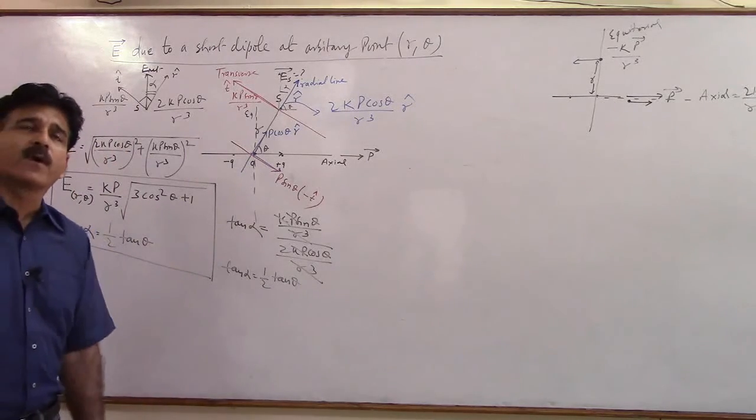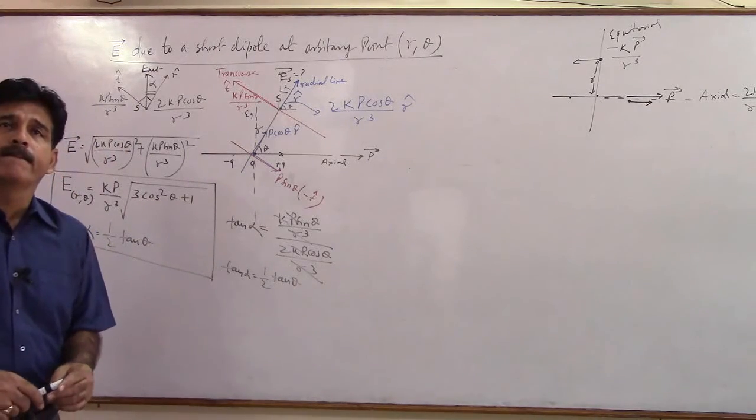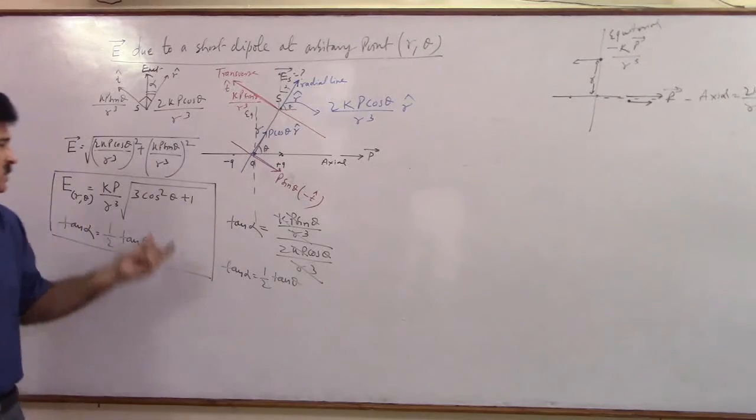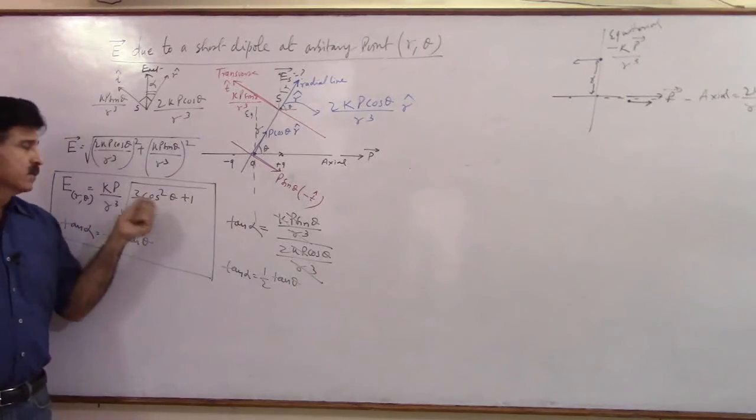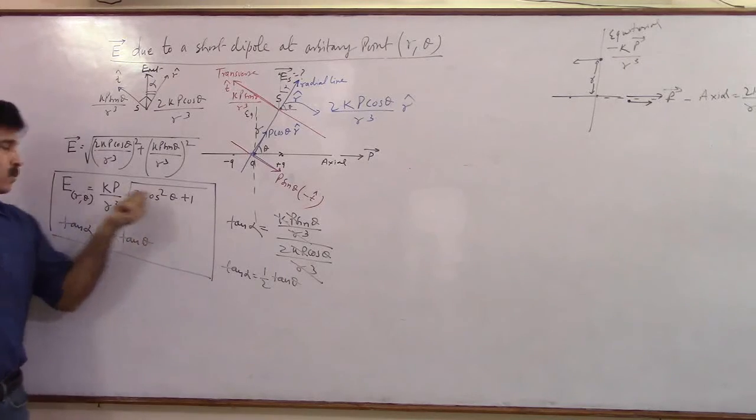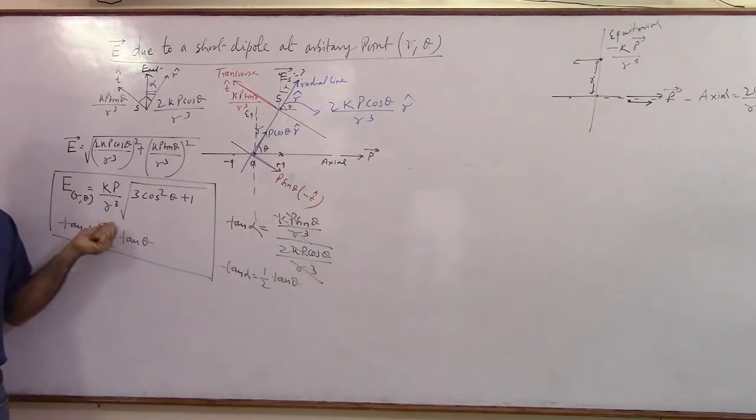But appreciate this. Now last word. If theta was 0, you said where will the point be? On axial line. What is cos 0 equal to? 1. So 3 plus 1, 4, under root of that is 2. So 2KP by R cube.